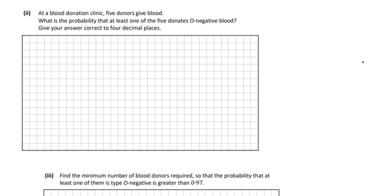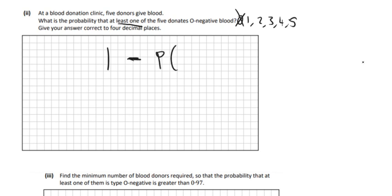Second part then: 5 donors give blood. What's the probability that at least one of them donates O- blood? So at least one means that one, two, three, four, or five will all count here. Zero is the only one that doesn't work. So what we're going to do is we're going to do 1 take away the probability that zero people are O-, because it will be easier to work that out.